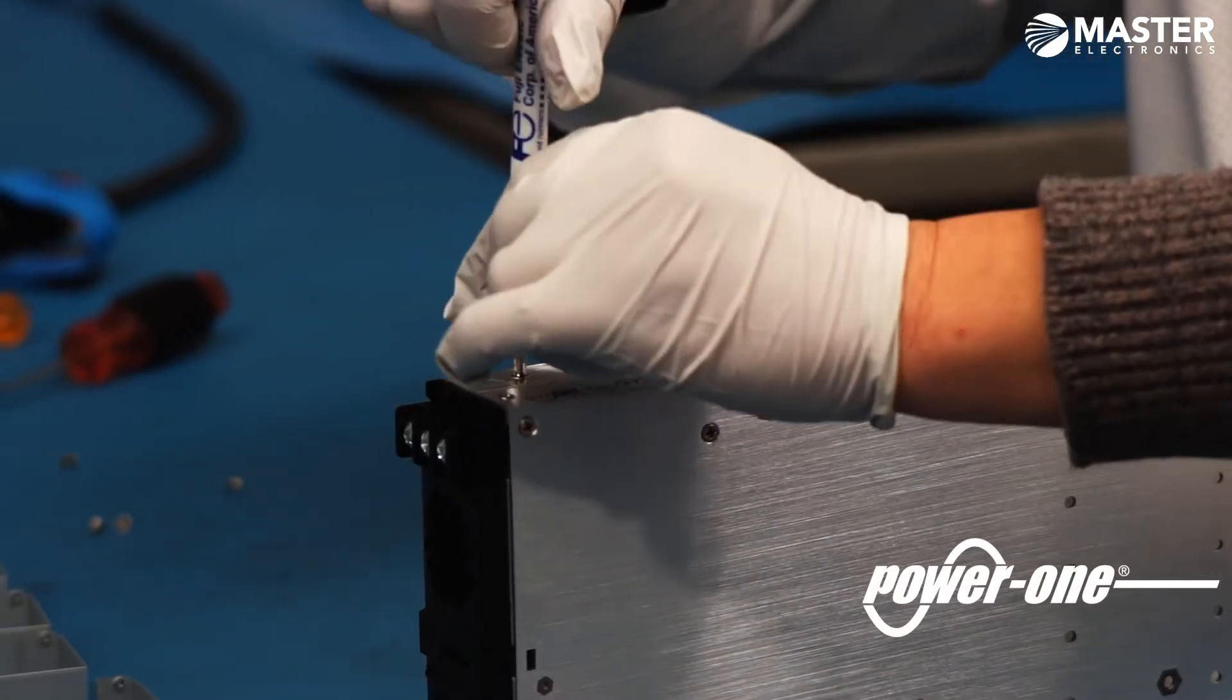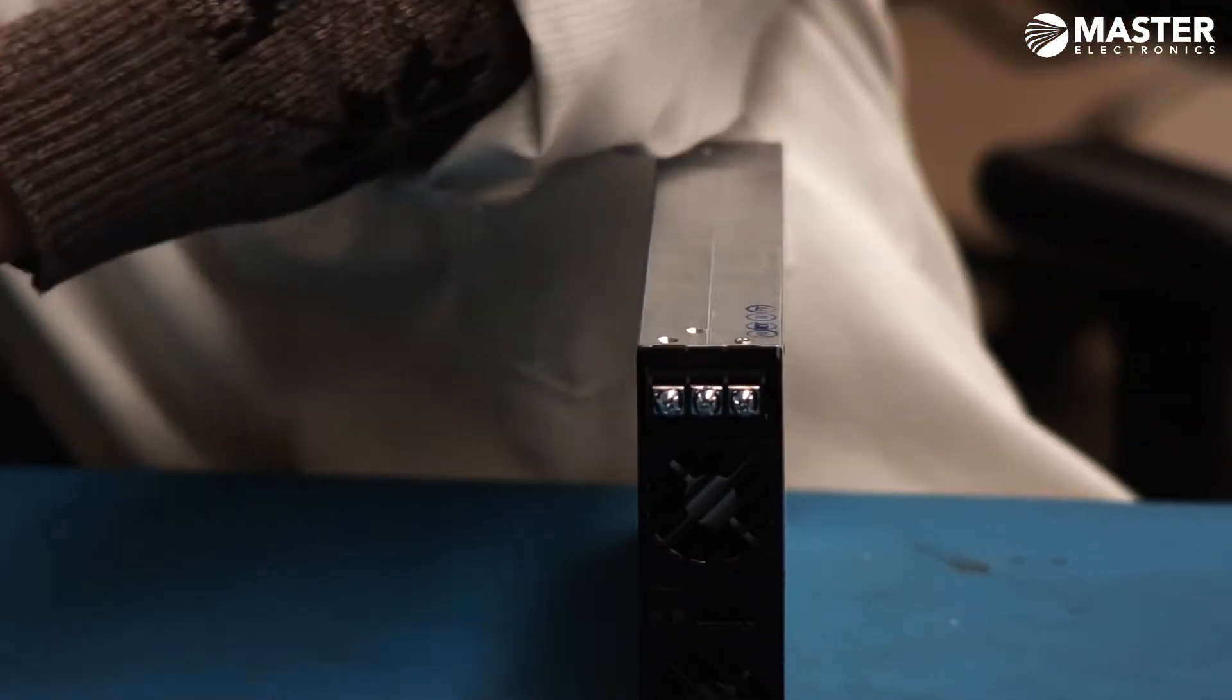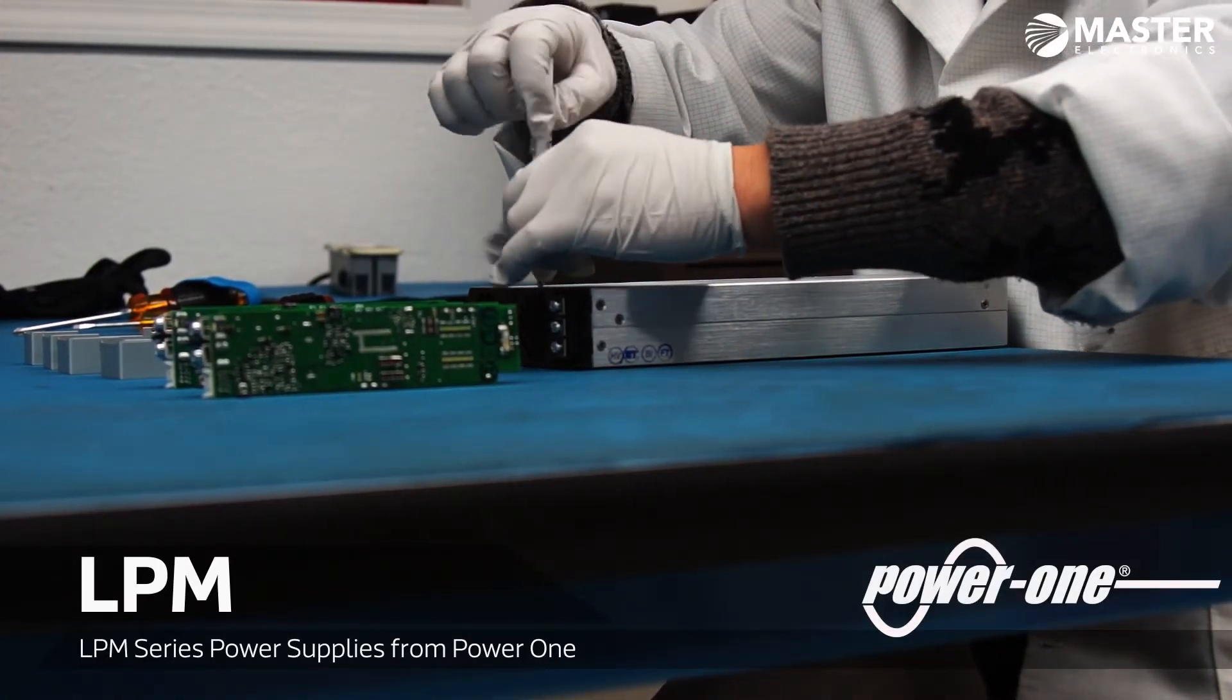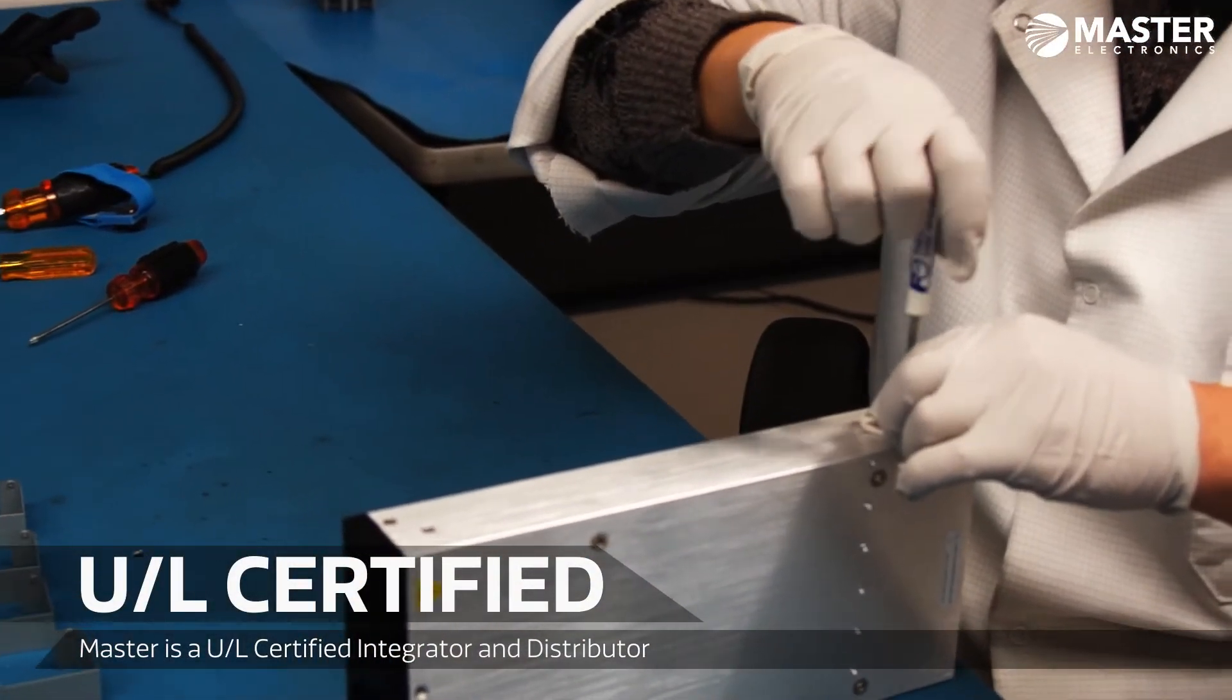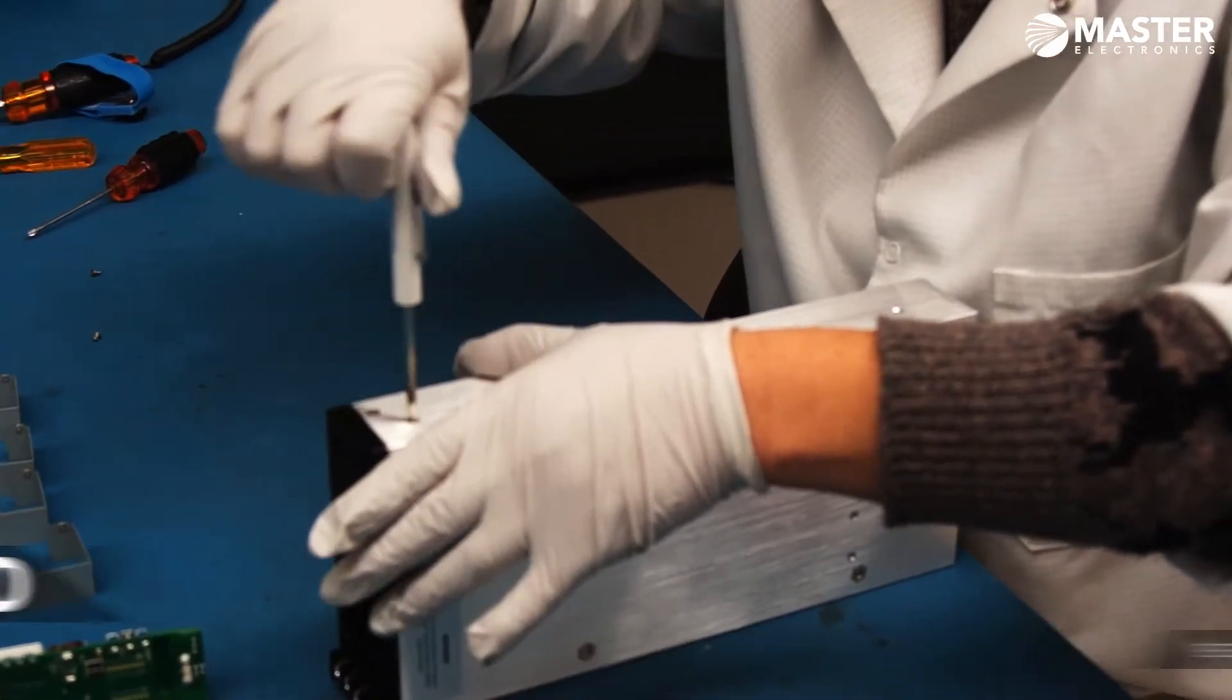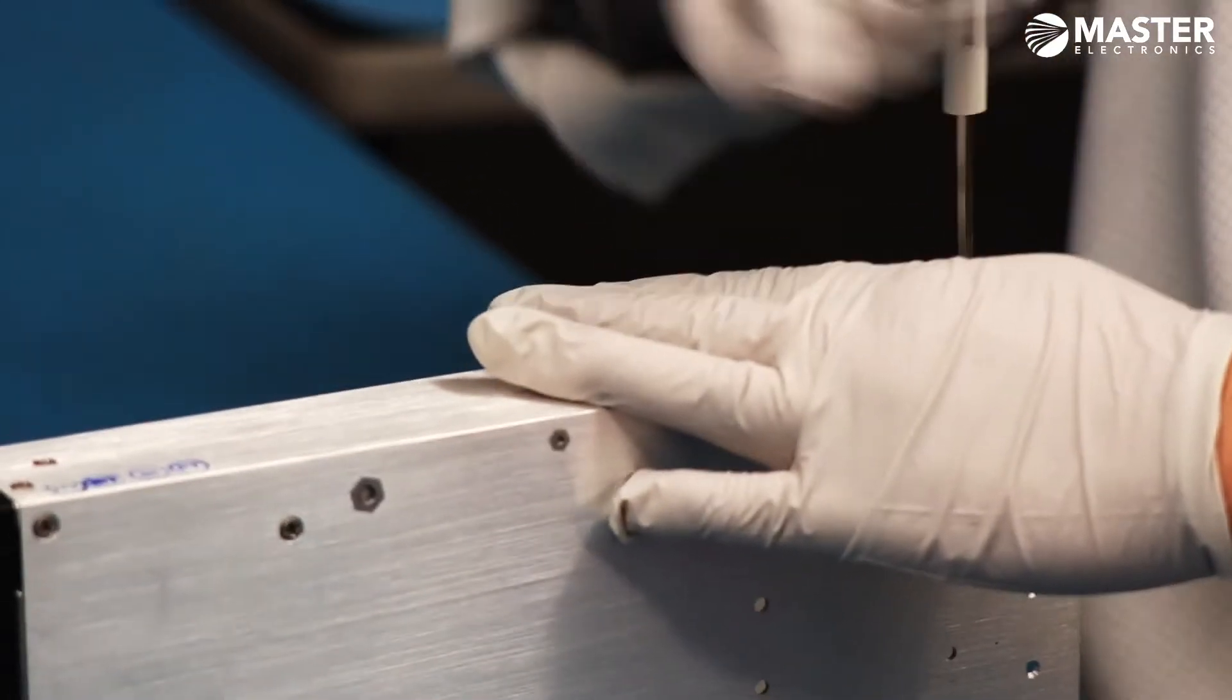Power One enjoyed several decades as a supplier of choice for many manufacturers of electronic systems. Over the past few years they developed the LPM 615 and LPM 409 modular power supply systems. Prior to the product launch, Master Electronics was selected as an authorized and certified integration distributor of the LPM series. The recent releases of this product line are available in both commercial and medically approved versions.